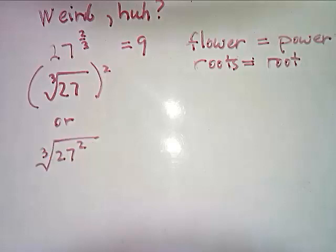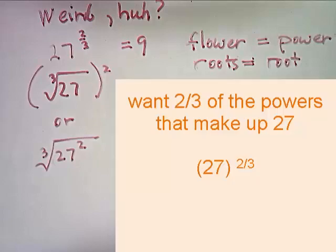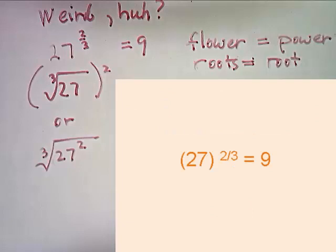We can also look at it this way. We want 2 thirds of the powers of 27. 27 is 3 cubed. We can find 2 thirds of 3, which is 2. 3 squared equals 9. So 27 to the 2 thirds power equals 9.